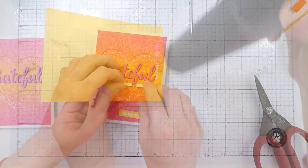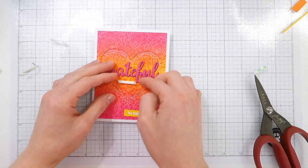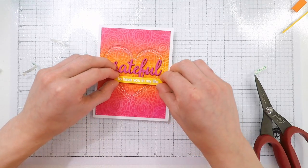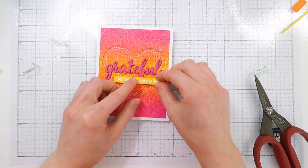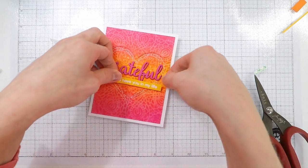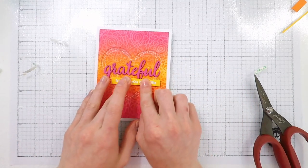I trim that yellow cardstock down into a little banner strip and then I'm going to add that over top of my card using some foam tape and I tuck that around the word grateful. I really love how that impression of the stencil looks so cool around all of our inlay die cut pieces. It adds so much interest to your ink blended background.